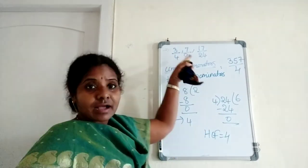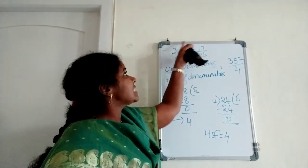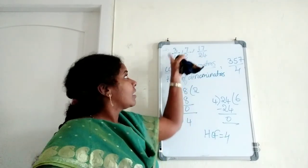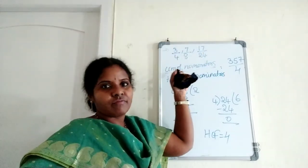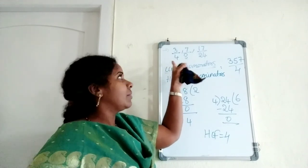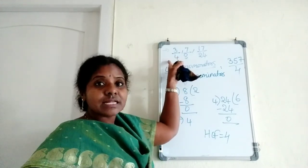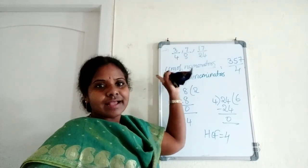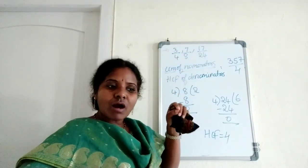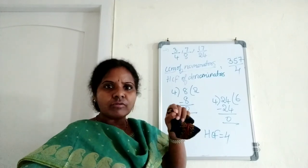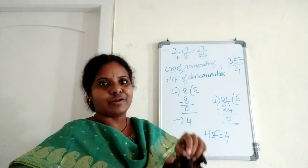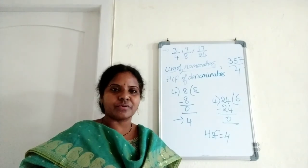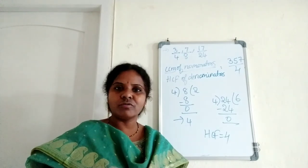Sometimes they will ask you to find the HCF of given fractions. The formula for HCF of fractions is HCF of numerators divided by LCM of denominators — the opposite of the LCM formula. I hope this is understood. Thank you for watching, and don't forget to subscribe.